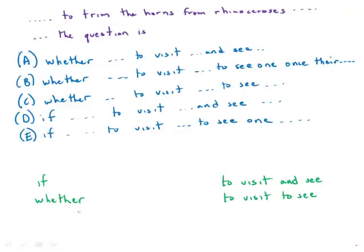If so-and-so happens, then such-and-such will happen. So here we're not presenting a condition if A then B. We're presenting an alternative. So for this 100% of the time on the GMAT if is going to be wrong and whether is going to be correct. So right away D and E are out.